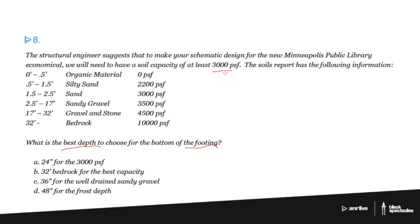They've asked for 3,000 PSF, which is actually a relatively low number for an institutional building — it would probably be higher, but I chose that to make this question work better. Looking at the soils report, we find that 3,000 PSF is achievable in the sandy soil anywhere in the range of one and a half to two and a half feet below grade. So we're at about 30 inches below grade to place our footing.